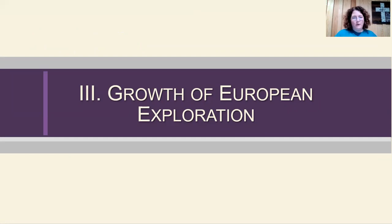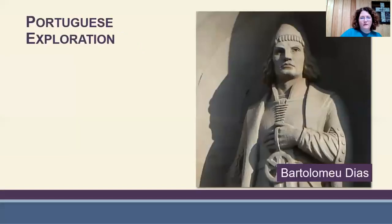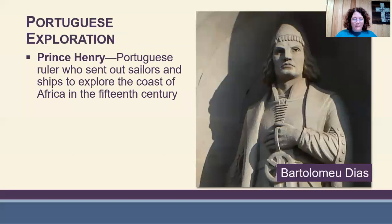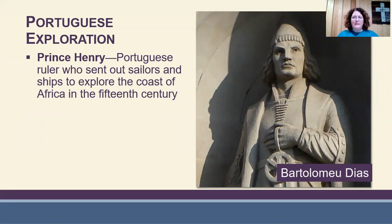Section 7.3 looks at the growth of European exploration — specifically the Portuguese, the Spanish, and the English. The Portuguese had a man named Prince Henry who loved everything about sailing and exploring. He created a school to train sailors to go out and explore the world, earning him the name Prince Henry the Navigator.